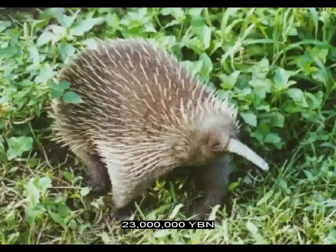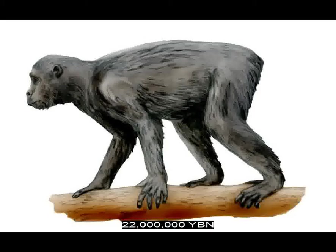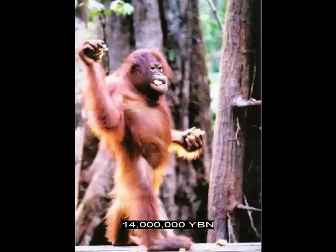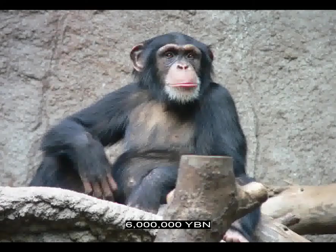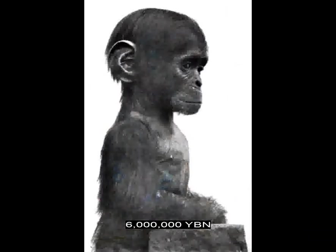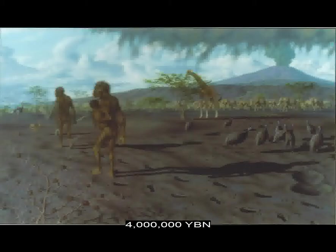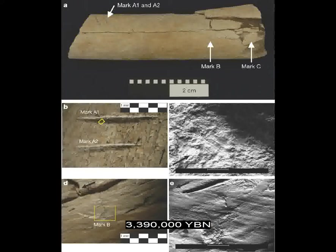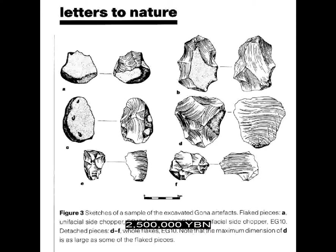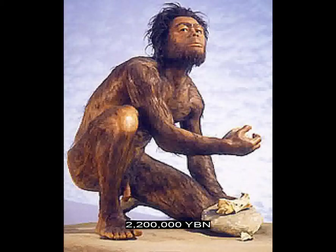Monotreme echidna. Monotreme duck-billed platypus. Hominoid Proconsul. Primates gibbons. Earliest extant hominid — orangutans. Hominids gorillas evolve. Chimpanzees evolve. Last common ancestor of chimpanzees and humans. Hominid Ardipithecus — earliest bipedal primate. Hominid Australopithecus evolves. Hominid footprints in Laetoli. Hominids use stones as tools. Hominid Paranthropus — a line of extinct early bipedal hominids. Oldest formed stone tools. Hominids Homo habilis evolve — earliest member of the genus Homo. This is when the human brain begins to get bigger.